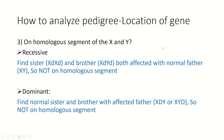Is it on the homologous segment of X and Y? If the trait is recessive, I try to find a sister and brother that are both affected but their father is normal. If both are affected and the gene is on the homologous segment, the father's genotype should be X-d Y-d. But if the father is normal, then it's not on the homologous segment of X and Y.